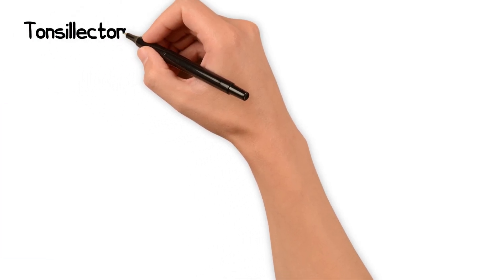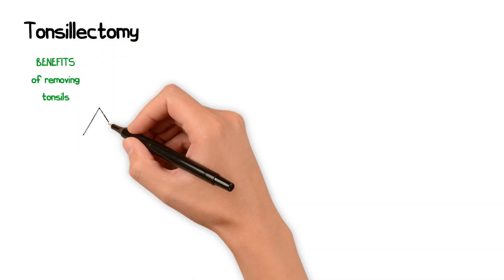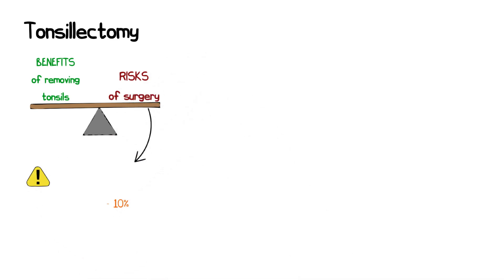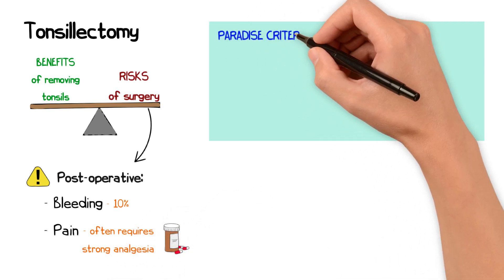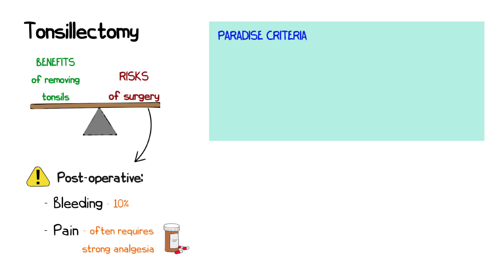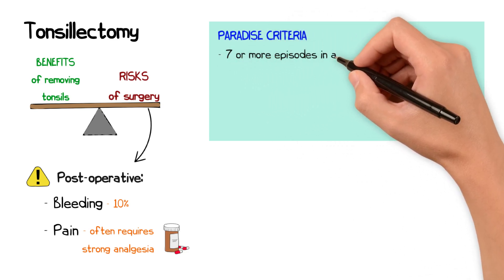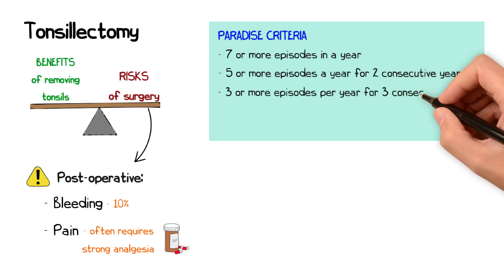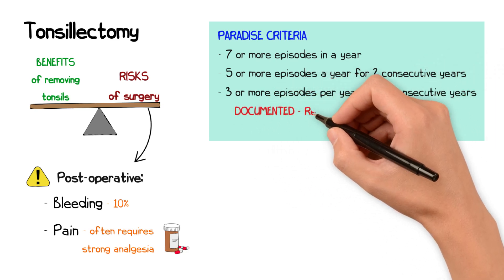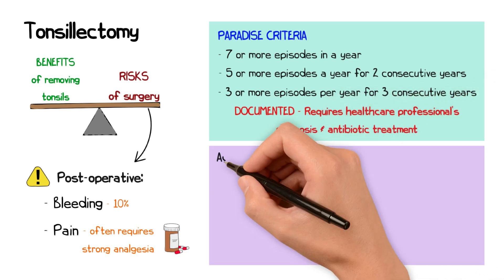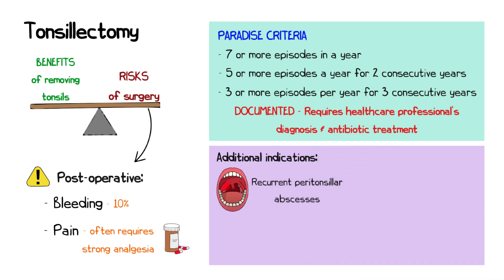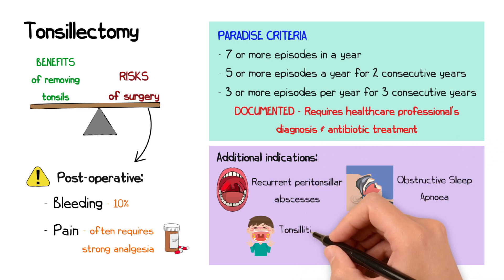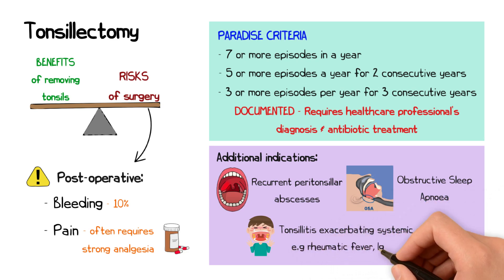In patients with recurrent tonsillitis, the benefits of removing the tonsils must be balanced against surgical risks — in particular, the 10% risk of post-operative bleeding, some cases requiring surgical intervention to arrest the bleeding, and post-operative pain often requiring strong analgesia. The Paradise criteria can inform the decision, with tonsillectomy recommended for seven or more episodes in a single year, five or more per year for two consecutive years, or three or more per year for three consecutive years. Each episode should be documented with a healthcare professional's diagnosis and antibiotic treatment. Additional indications include recurrent peritonsillar abscesses, obstructive sleep apnea particularly in children, or tonsillitis exacerbating systemic conditions such as rheumatic fever or IgA nephropathy.